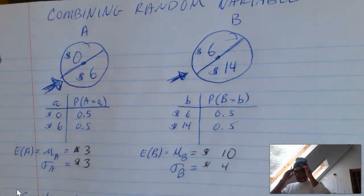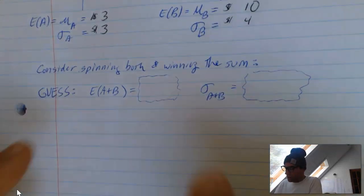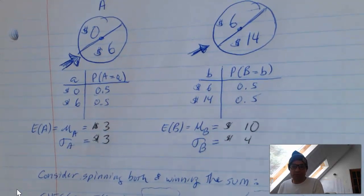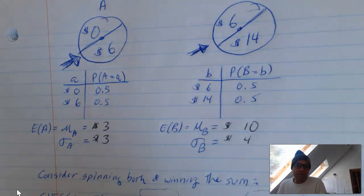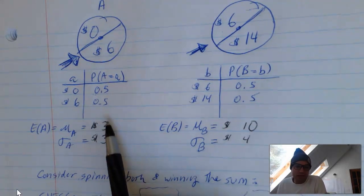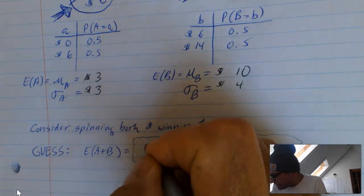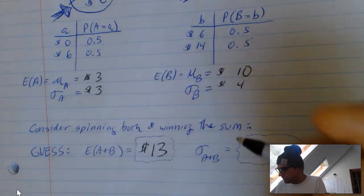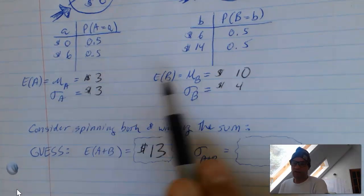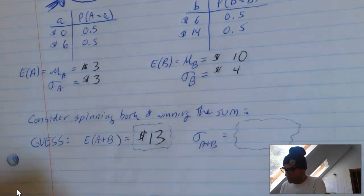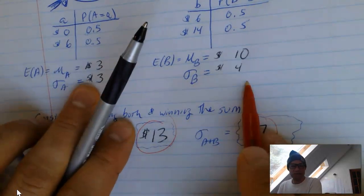Now, what happens if I say consider spinning both, and you win the sum? So if you spin both of these, you add them up. Well, on average if you're winning $3 here on average and $10 here, I'd guess I would win 3 plus 10, I'd guess $13 if you get to play both. That's my guess. And then if this guy has a standard deviation, if I'm off by 3 and here I'm off by 4, maybe I'll just add those, 3 plus 4, and I'll say 7. Now remember, these are just guesses. Let's see if I can add my standard deviations and add the means.